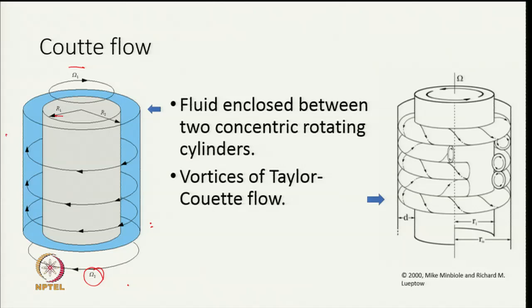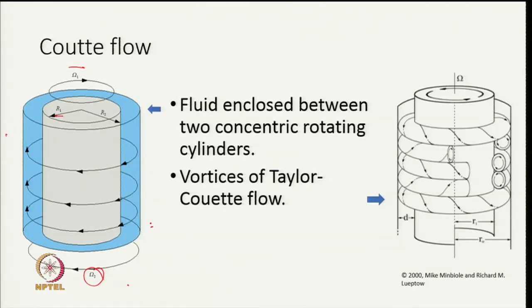Fluid is enclosed between these two cylinders and as the difference in angular velocity changes, you find dynamical phenomena that occurs because of what is known as the Taylor-Couette instability. As the angular velocity difference increases, convective rolls are set up and these rolls occur as toroidal flows between these two walls.